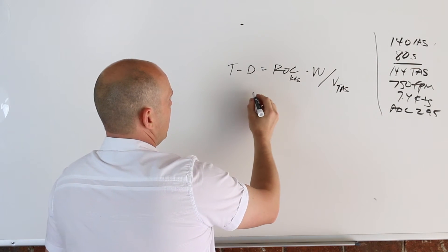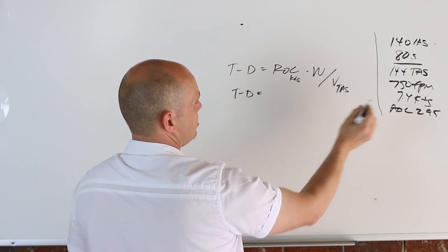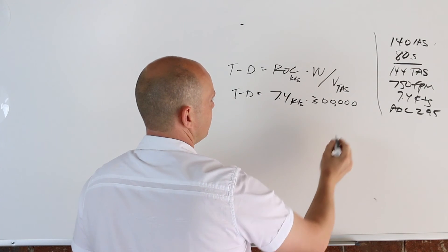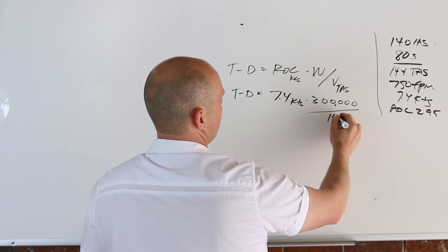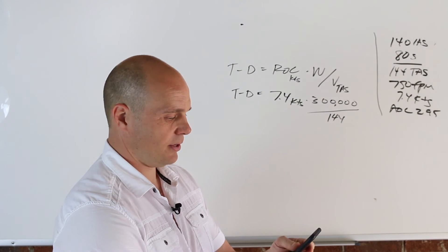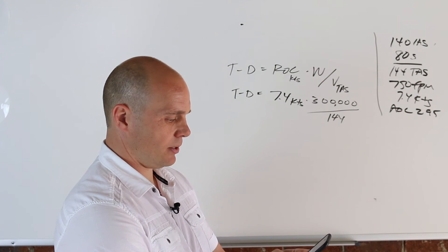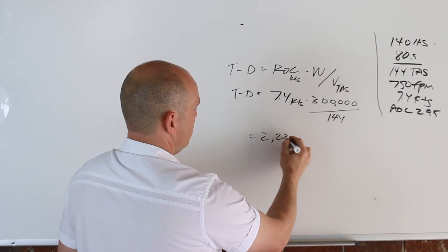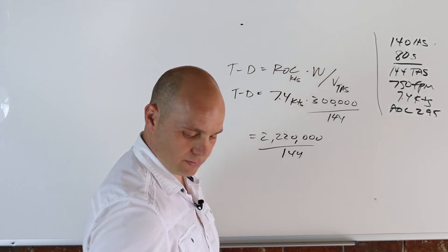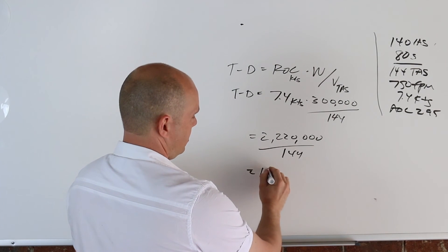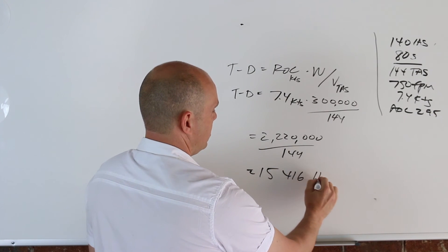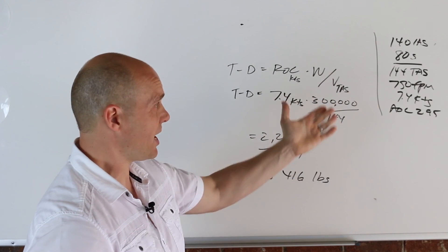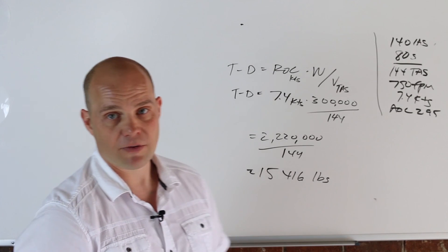So equals rate of climb, let's assume here it's 7.4 knots times 300,000 divided by true airspeed 144. Again, we'll use a calculator. So 7.4 times 300,000 is 2,229,000 divided by 144. So this is rounding off, but that's what you're left with.